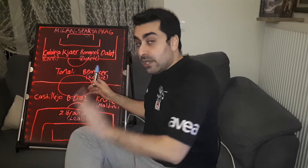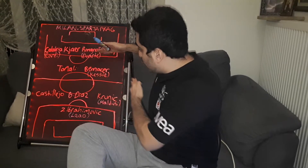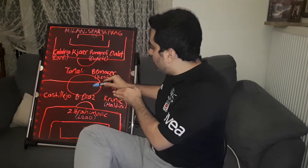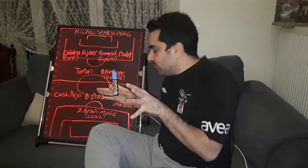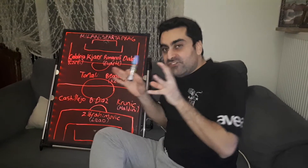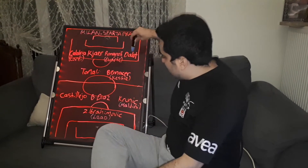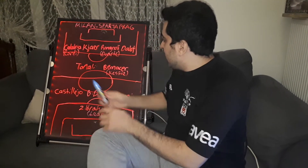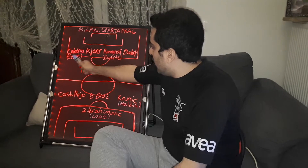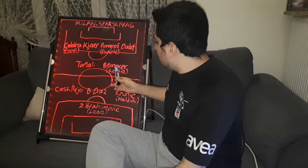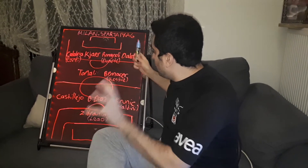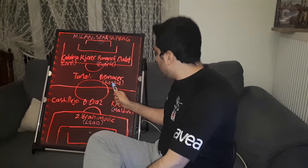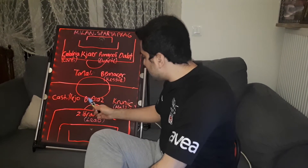Bennacer played close to Milan's defensive line while Tonali played in front of him more offensively. Stefano Pioli then made further changes: Calabria out, Conti in; Romagnoli out, Duarte in; Bennacer out, Kessie in.